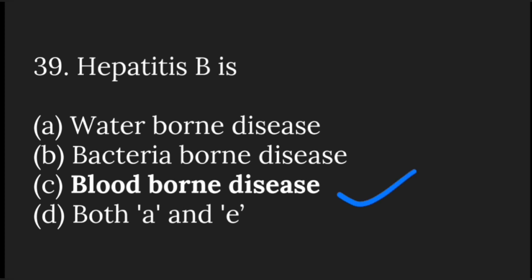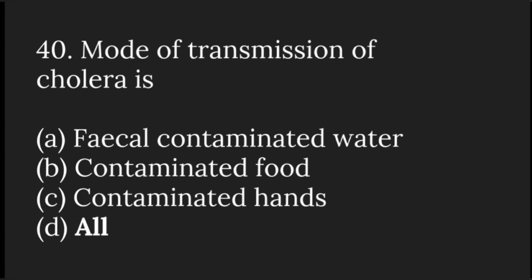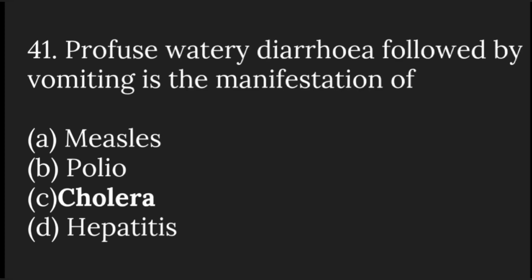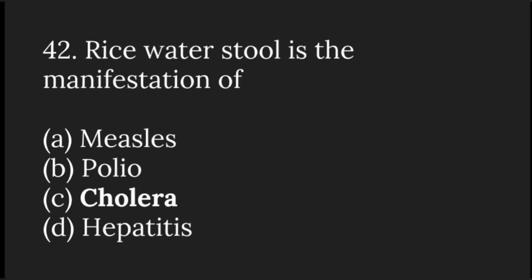Hepatitis B is a blood-borne disease. The mode of transmission of cholera is fecal contamination of water, contaminated food, and contaminated hands — the answer is all. Profuse watery diarrhea followed by vomiting is a manifestation of cholera. Rice-water stool is the classical sign of cholera.